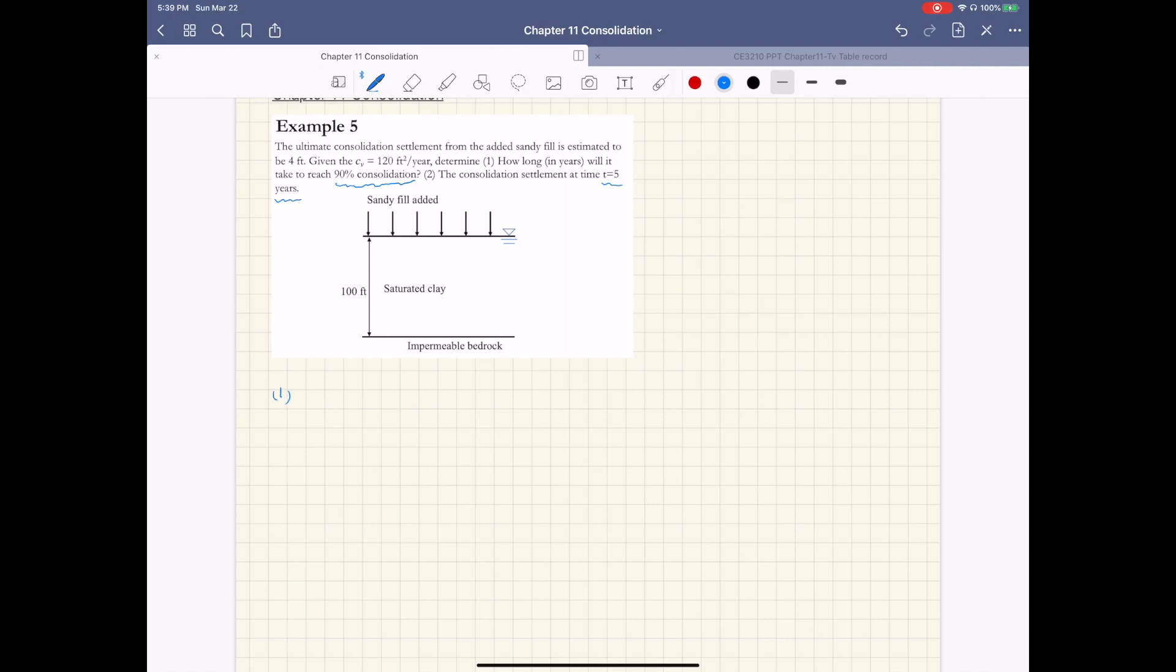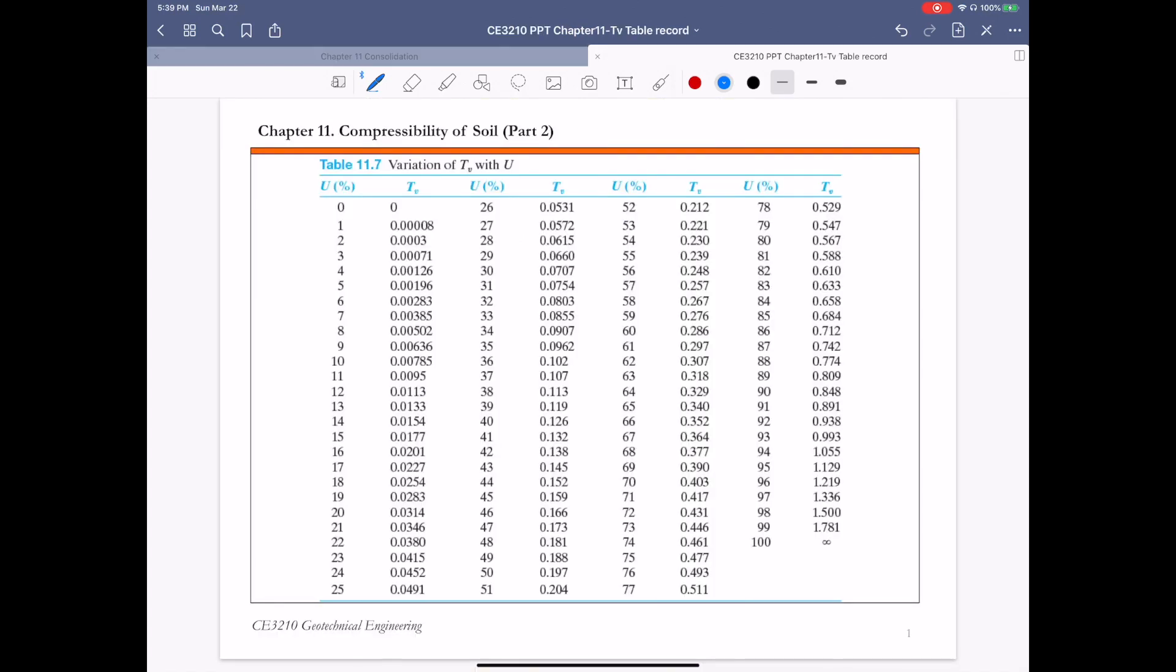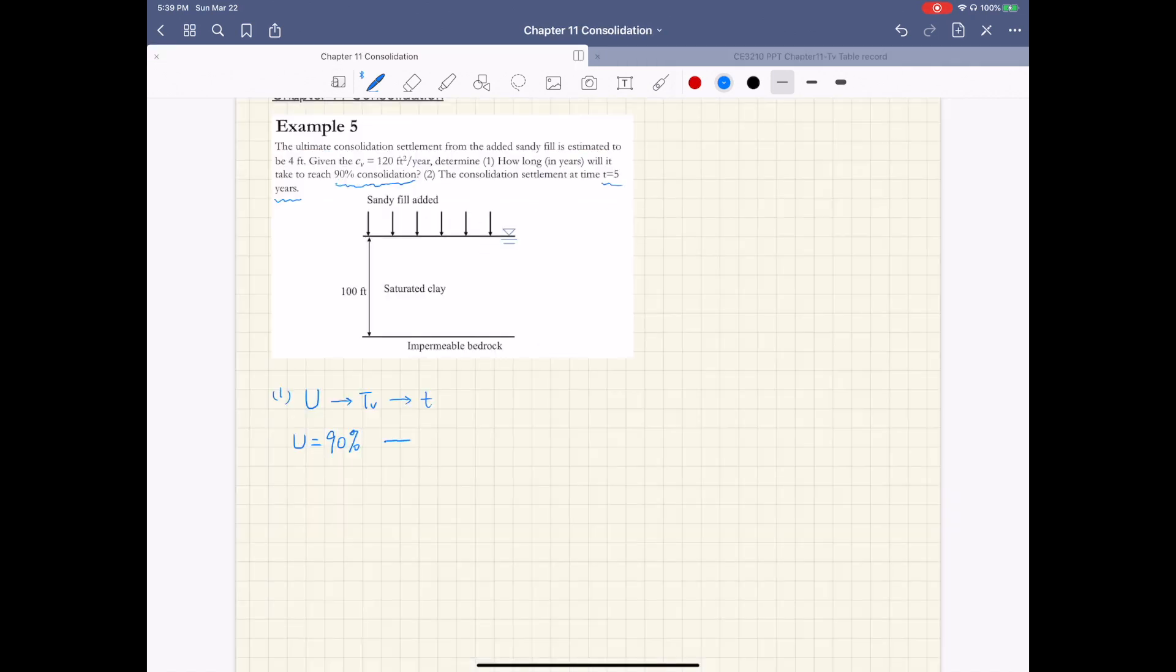Just as what we did for example 4, to estimate how much time it takes, I'm going to use the average degree of consolidation to get the corresponding time factor and then calculate time t. So for this problem, the average degree of consolidation is 90%. And then from table 11.7, find U of 90%, then the corresponding time factor is 0.848. So we get Tv equals 0.848. This is from table 11.7.